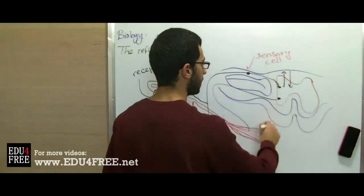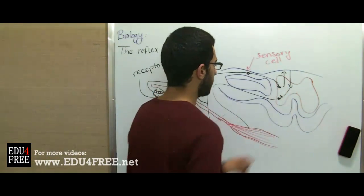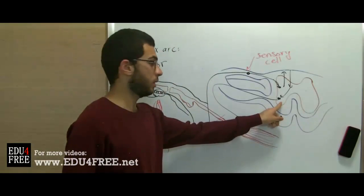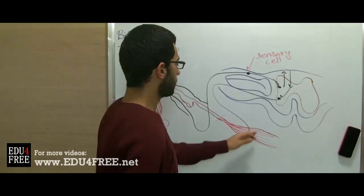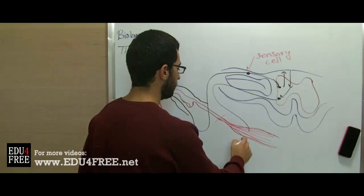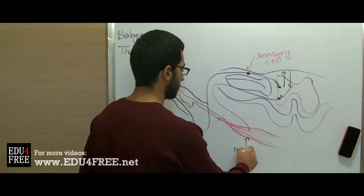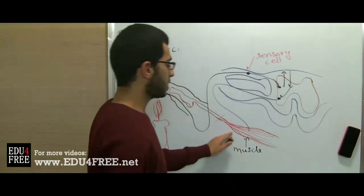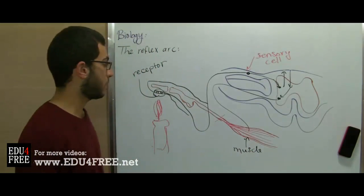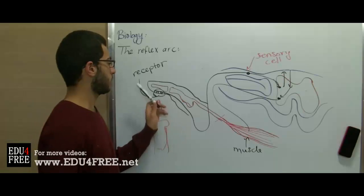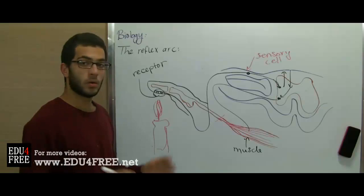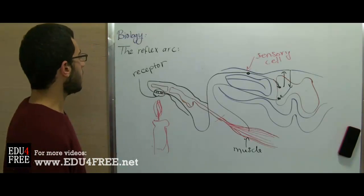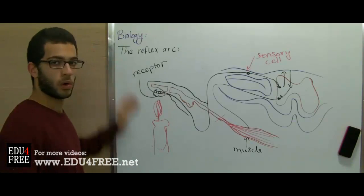Then it goes back again through the motor neuron, and it moves through the nerve fiber till it reaches the muscle of the finger, which is finally stimulated with the proper response, telling the finger to move away from the candle flame. So, this is how the reflex action works.